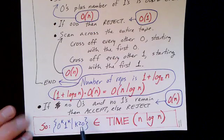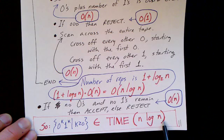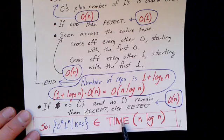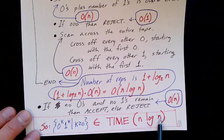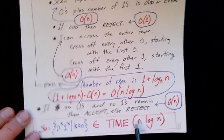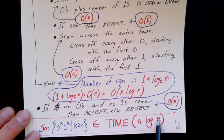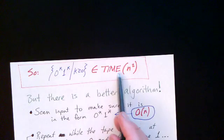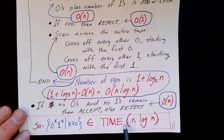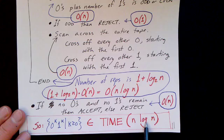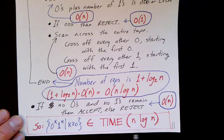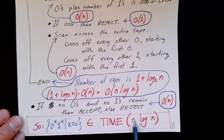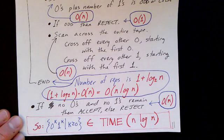Finally, the last step — scanning for zeros and ones to make sure nothing remains and doing the accept or reject — is just an order N operation. So we've found an algorithm that runs in order N log N. We've now shown that this problem is a member of a more restrictive complexity class: the time complexity class N log N. Before, we had an algorithm that solved it in order N squared time; now we've found a better algorithm, allowing us to show that the problem is in a tighter, more restrictive complexity class — it can be solved in order N log N time.